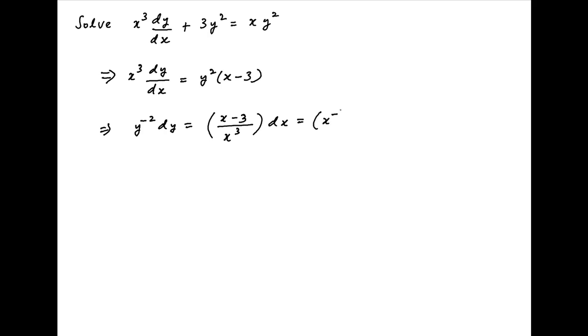The right-hand side is equal to x raised power minus 2 minus 3 times x raised power minus 3 in brackets multiplied by dx.